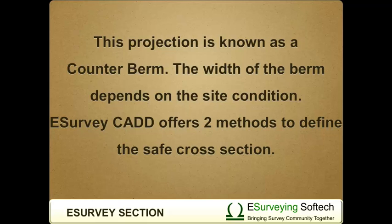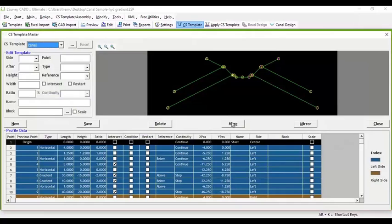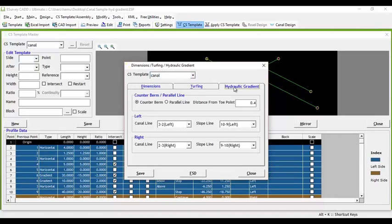eSurvey CAD offers two methods to define the safe cross-section. In cross-section template screen, design a canal template as shown. Select More option in pop-up window, select Hydraulic Gradient tab, then select the type of hydraulic gradient that is counter beam or parallel line.